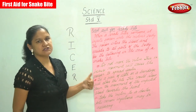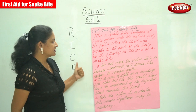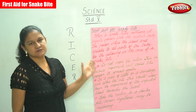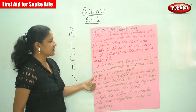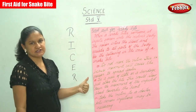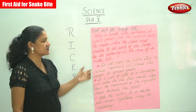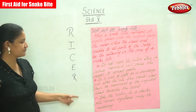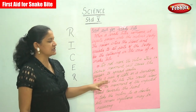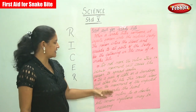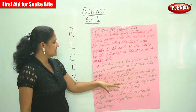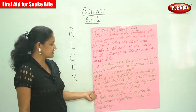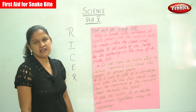The first step is do not move the victim, because movement will cause the poison to spread faster. The next point is to tie a piece of cloth or a bandage just above the bite. This would slow down the movement of the infected blood towards the heart.